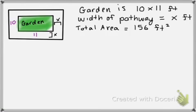Okay, let's try one more type of problem together. So this says that you have a garden that is 10 by 11 feet. And you have a little pathway around it, which we don't know the length of, so we call it x. So it's a uniform pathway. It's the same width all the way around. And they tell us that the total area of the garden and the pathway together, meaning total, is 156 feet squared.